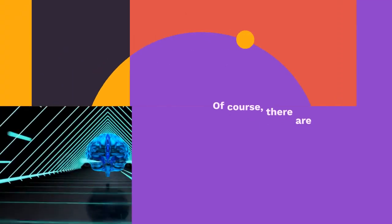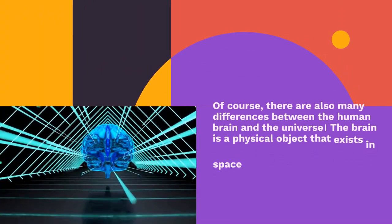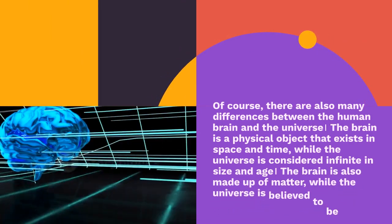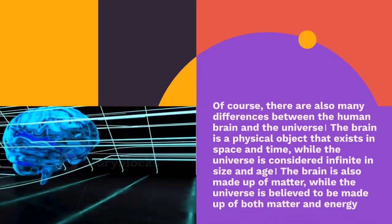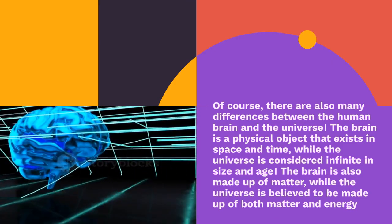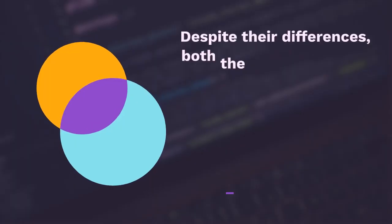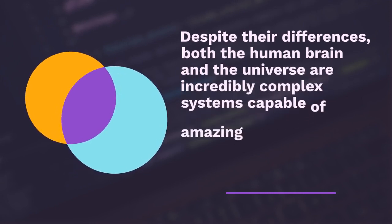Of course, there are also many differences between the human brain and the universe. The brain is a physical object that exists in space and time, while the universe is considered infinite in size and age. The brain is made up of matter, while the universe is believed to be made up of both matter and energy.